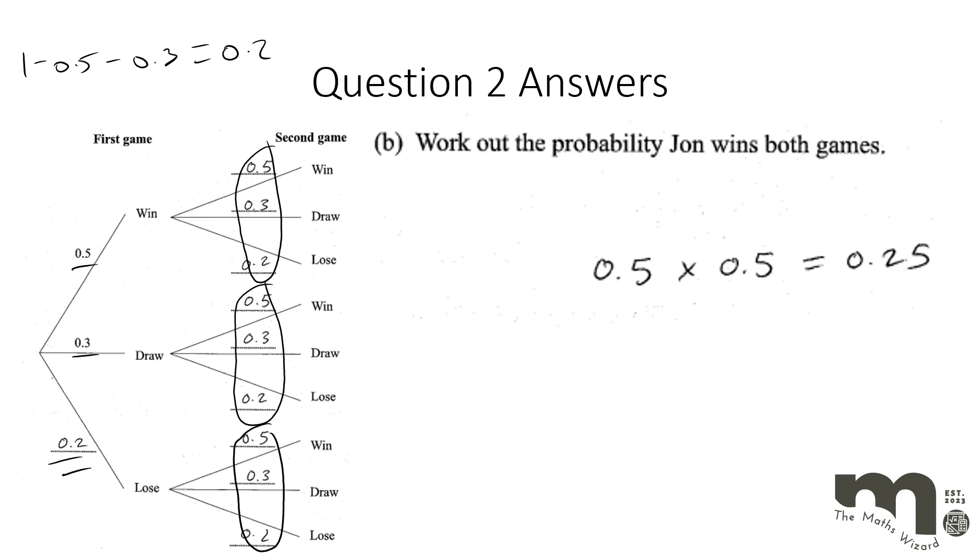Well the question I asked you was what's the probability of win-win. So we've got 0.5 for that one. And we've got 0.5 for that one. So 0.5 times 0.5 will give you 0.25.